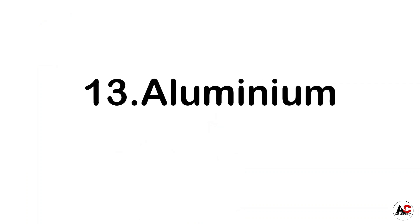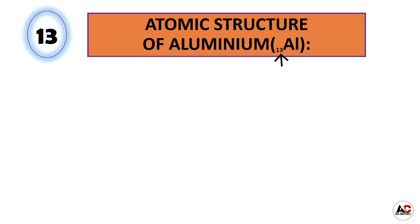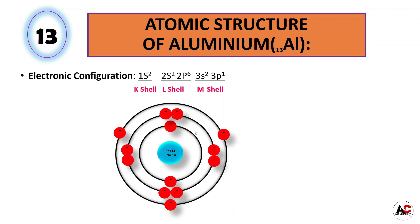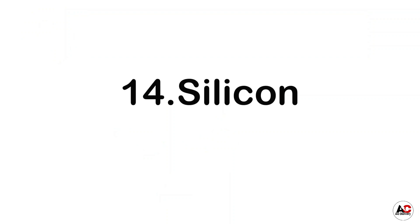Now aluminum. Atomic structure of aluminum. The atomic number of aluminum is 13, meaning it has 13 electrons. So the electronic configuration of aluminum is 1s2, 2s2, 3s2, and 3p1. With the help of this electronic configuration, we can easily draw the atomic structure of aluminum. It has 13 protons and 14 neutrons inside the nucleus and 13 electrons around the nucleus: 2 are in the K shell, 8 are in the L shell, and 3 are in the M shell.